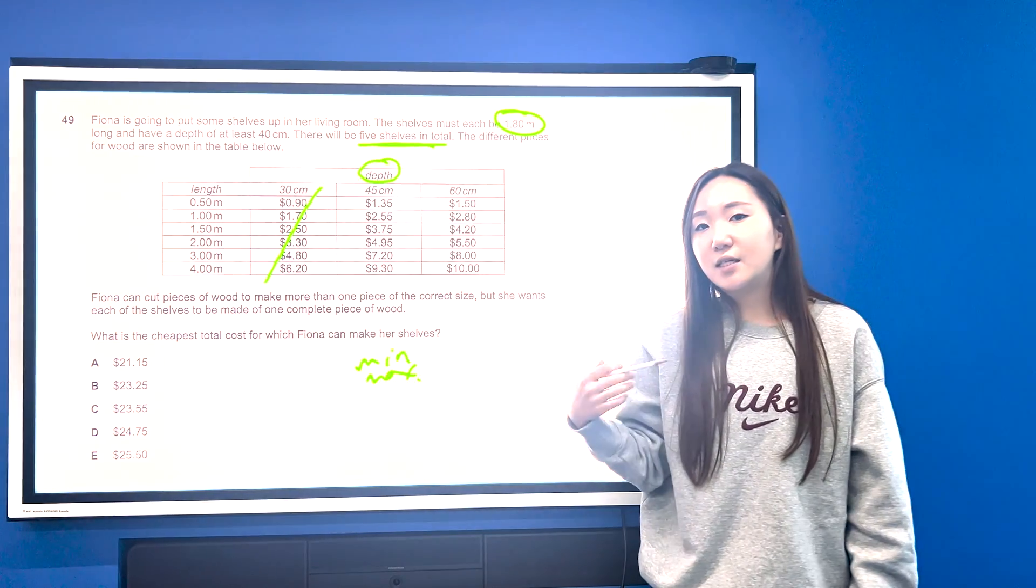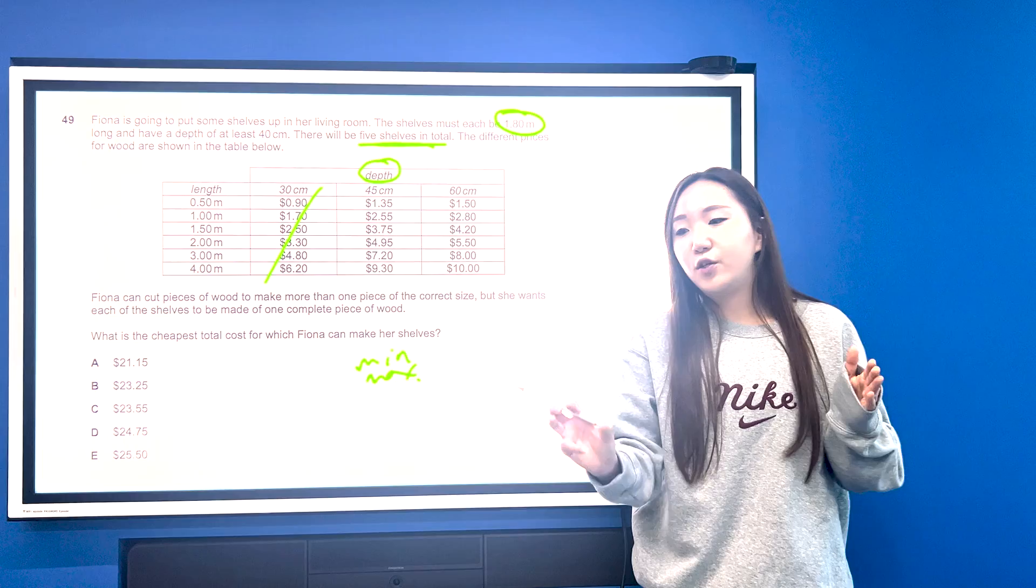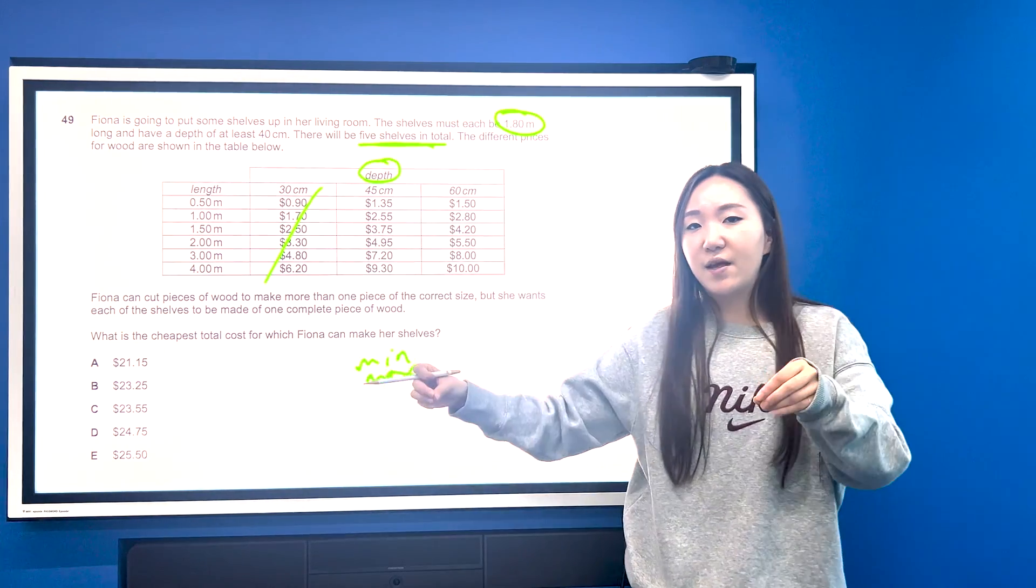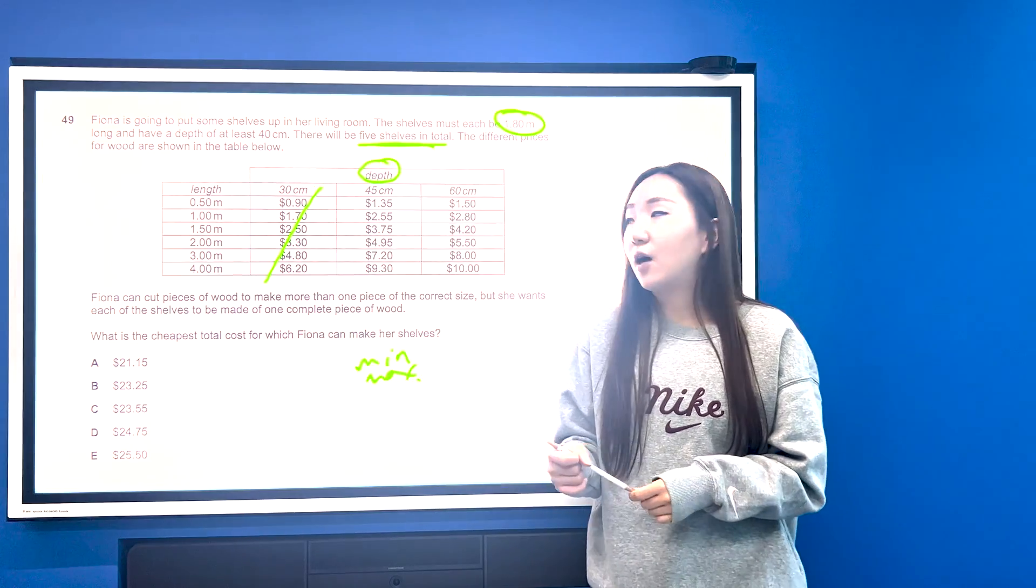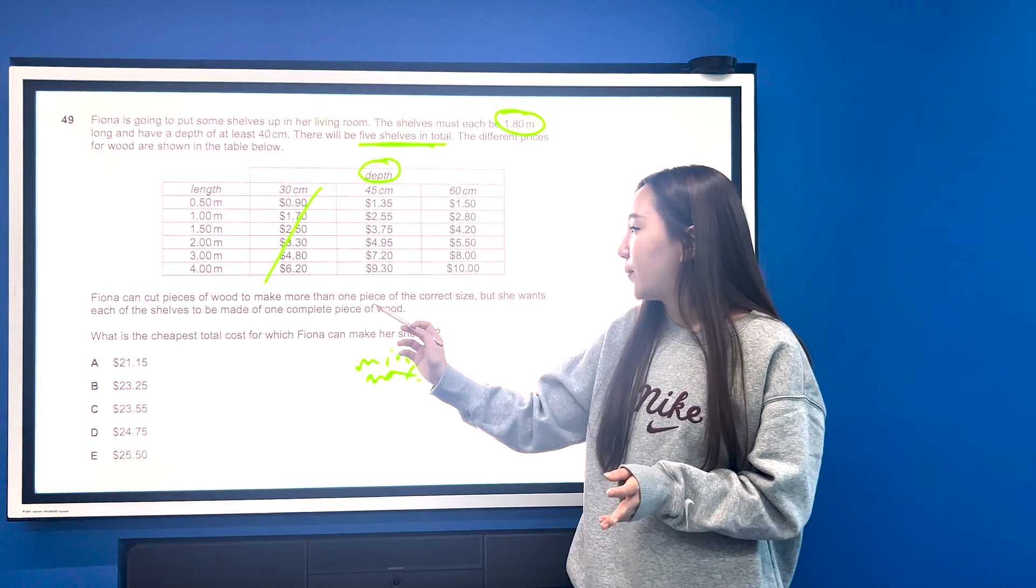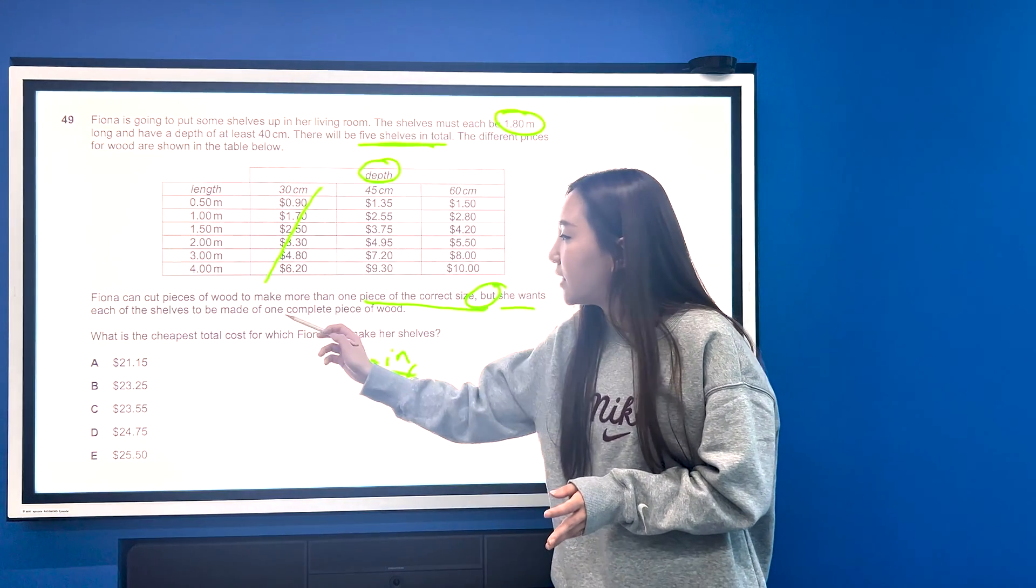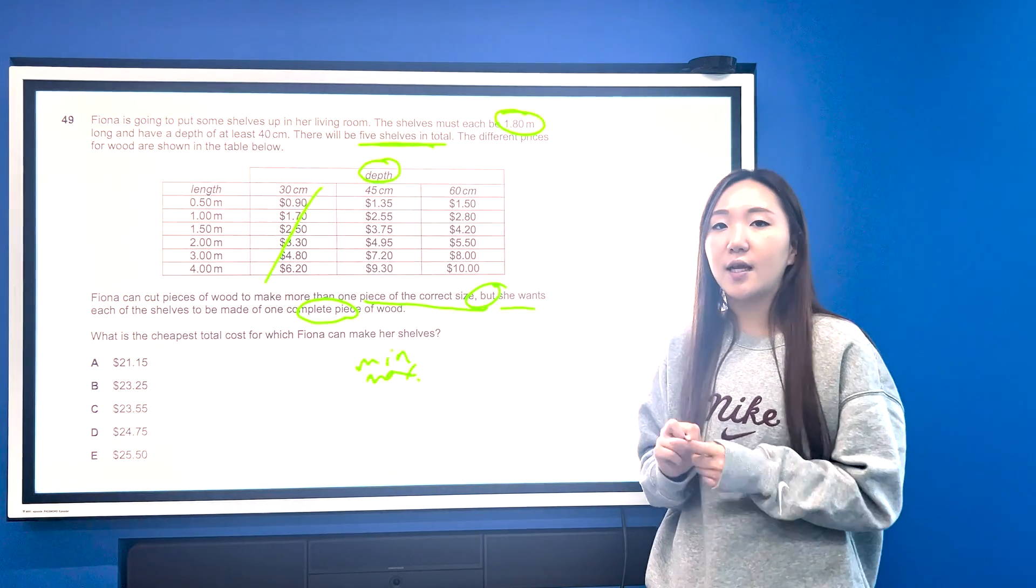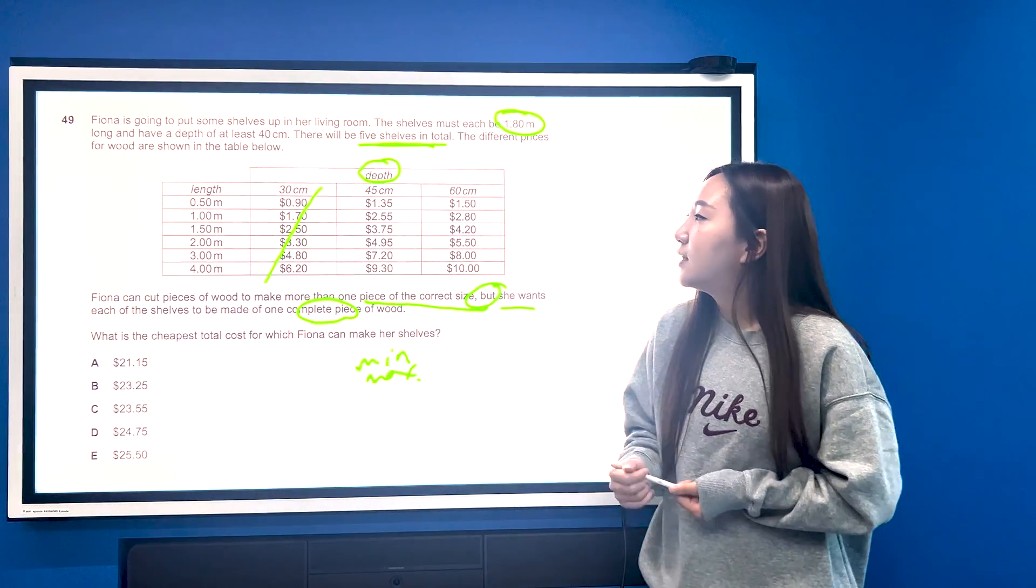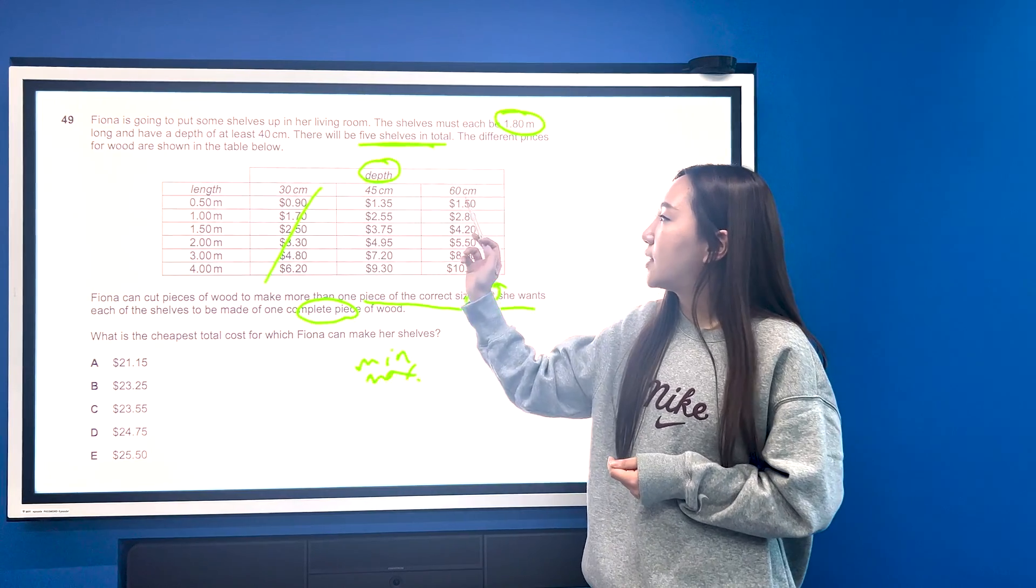Then in these questions they usually give you an additional bit of information which basically says you cannot cut the ribbon and then use the scrap and join it with another scrap to make the thing. And it's usually the same condition every time, so watch out for that one. Now in this case as well, we're saying Fiona can cut pieces of wood to make more than one piece of the correct size, but she wants each of the shelves to be made from a complete piece of wood. As I said this is the most common condition. It always comes up, so watch out for it. So that means basically we're left with this information so far. Let's see if we can cut out more.